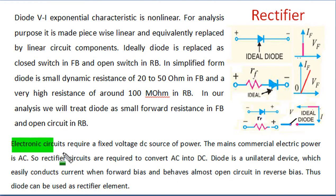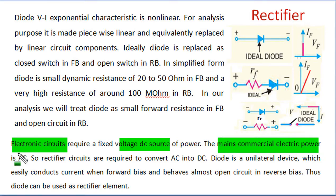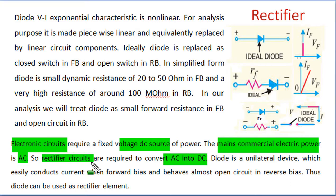Every electronic circuit requires a fixed voltage DC source, and our main commercial electric power is in AC. So we need a circuit which can convert this AC into DC, and for that we need rectifier circuits. The question which comes to mind is who will perform this rectification, and the answer is the diode.